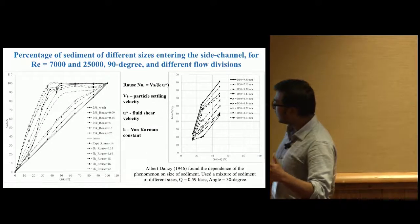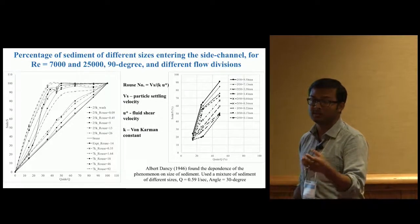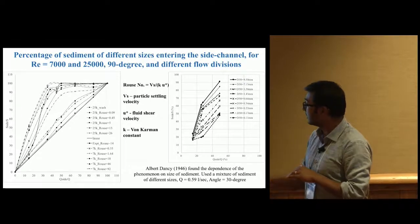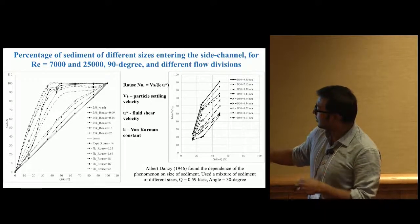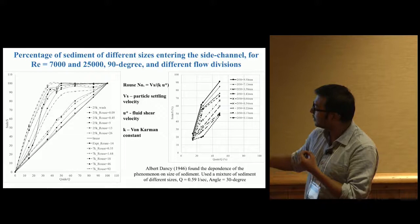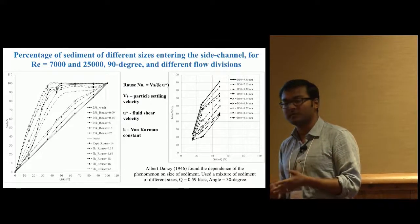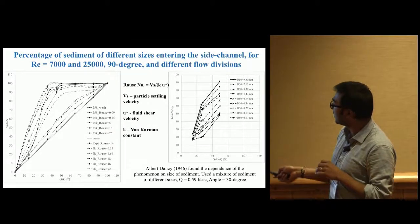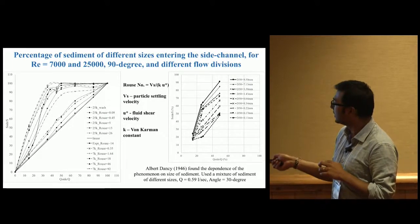We collapsed the data and found the important parameter wasn't sediment size, but the ratio of particle fall velocity to shear velocity - a non-dimensional parameter called the Rouse number. Higher Rouse number means higher non-linearity. We found an old 1946 MS thesis experiment that found something similar for different sediment sizes.